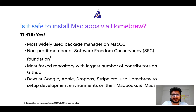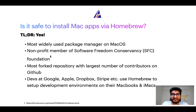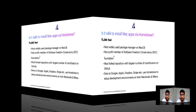Many other open source projects like Git, Busybox, Samba, and Vim are all part of this Software Freedom Conservancy organization. Also, you might be surprised to know that Homebrew is the most forked project on GitHub and has the largest number of contributors on its GitHub repository. Many devs at organizations like Google, Apple, Dropbox, Stripe, etc. use Homebrew to set up different development environments on their MacBooks and iMacs.